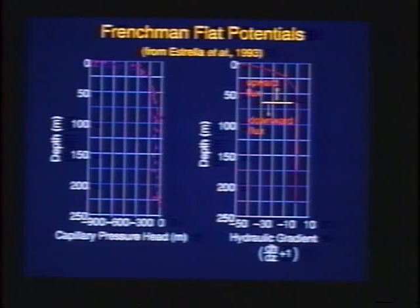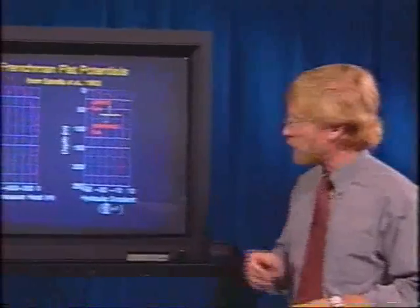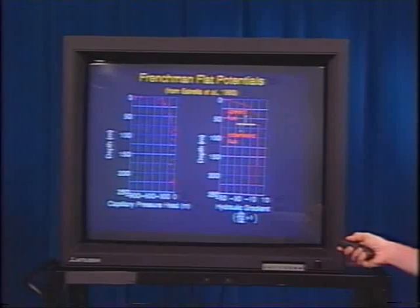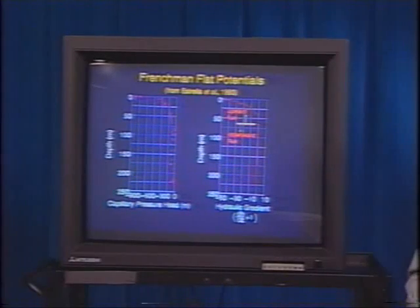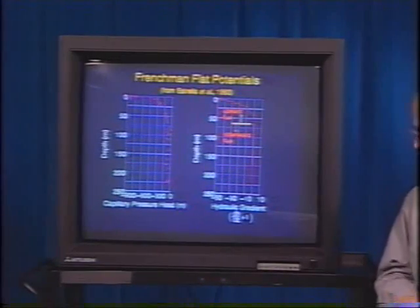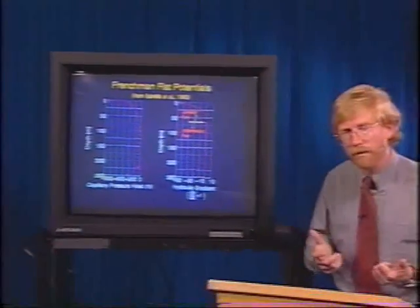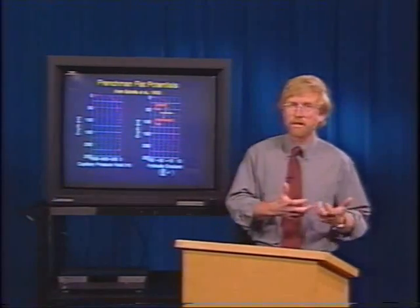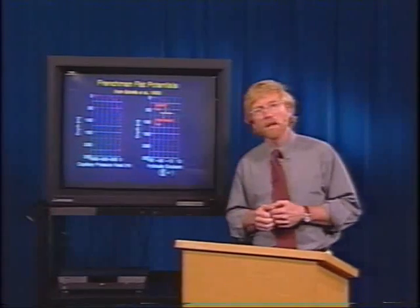We can take these capillary pressure data, calculate a gradient in capillary pressure, add that to our gravity gradient, and determine the direction of flow — the hydraulic gradient. That's the graph on the right-hand side. The left axis is depth, with land surface at the top and water table at 250 meters. The bottom axis is the hydraulic gradient. A hydraulic gradient of zero means no vertical flow — Darcy's Law says there's no flux.